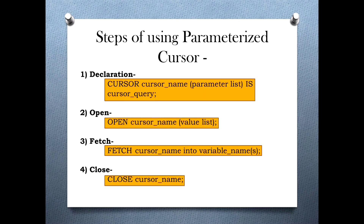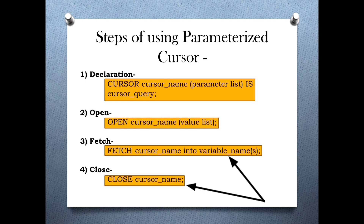Let's look into the steps of using a parameterized cursor. The steps are very much similar to that of a general explicit cursor. The only difference is that while declaration we have to give the parameters along with their data types, and at the time of opening the cursor we have to pass the respective values. The last two steps are exactly the same as that of a general explicit cursor.